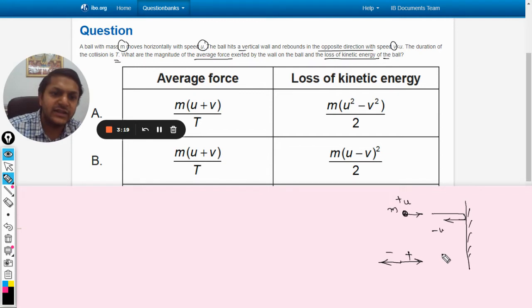And it is given that velocity is v, so it is moving with minus v now. And the total time that was taken was capital T.